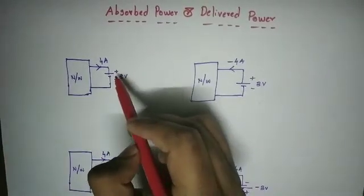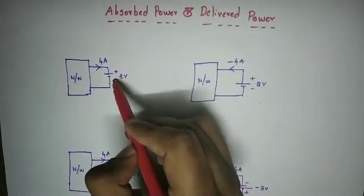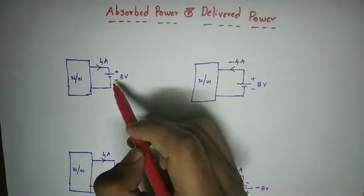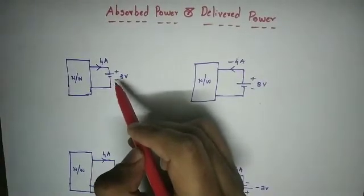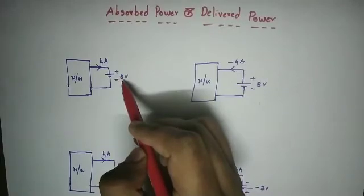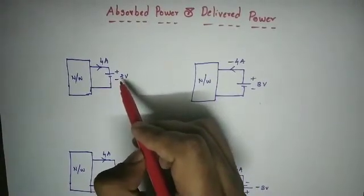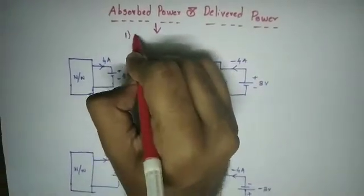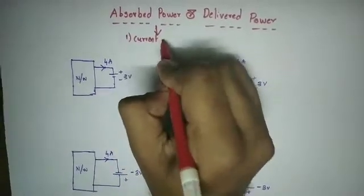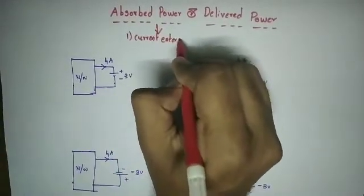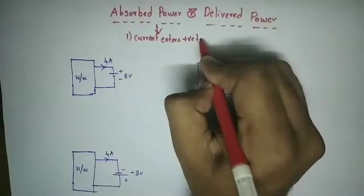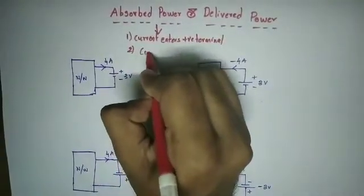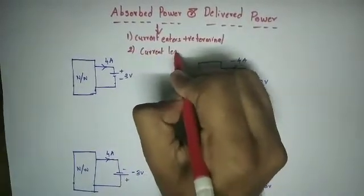The condition for power absorbed: current enters the positive terminal. Equivalently, current leaves the negative terminal. These are the two conditions for power absorbed.